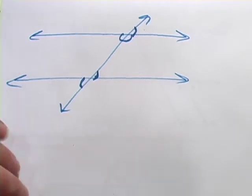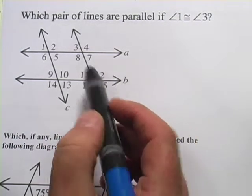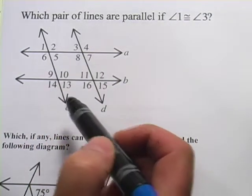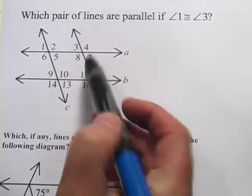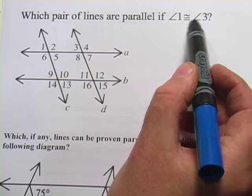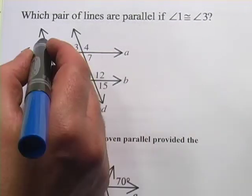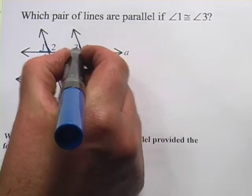Let's look at a couple of problems. So this complicated figure, we've actually got a couple of sets of lines here. It says which pair of lines are parallel if angle 1 is congruent to angle 3, meaning they have the same measure. So here's angle 1 right here. Here's angle 3 right here.